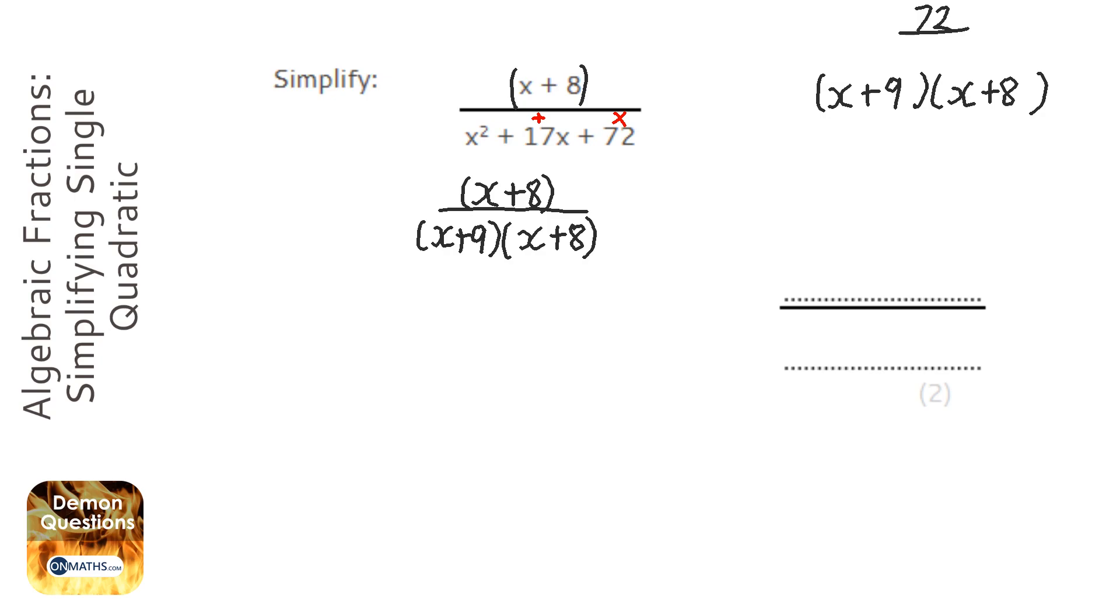Now the beauty of algebraic fractions is we can actually simplify it here. What we're going to do is divide top and bottom by x plus 8. So when I do that from the bottom, that just leaves x plus 9. But when I do it to the top, whenever you divide a number by itself, you're always left with 1. So my answer is 1 over x plus 9.